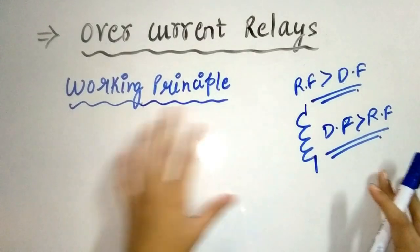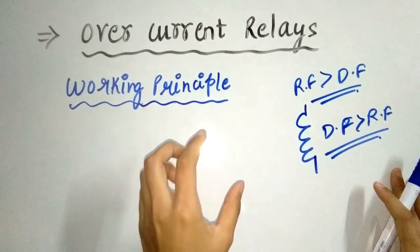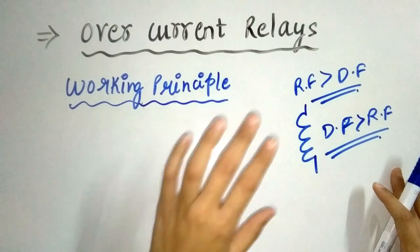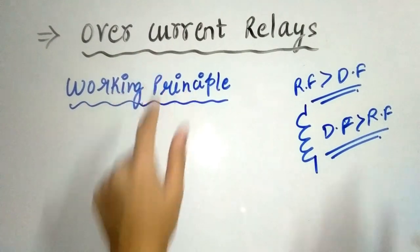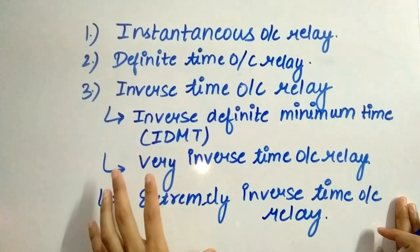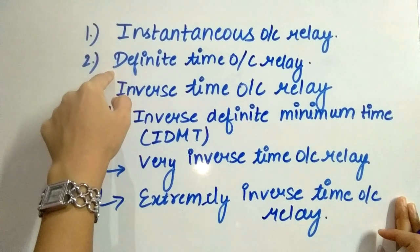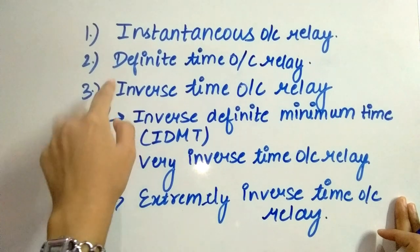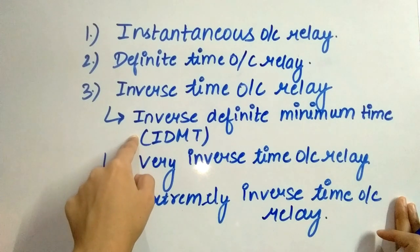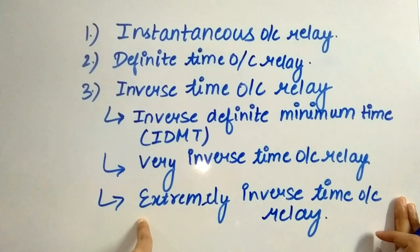The basic working principle is the same for all types of overcurrent relays. There are various types of overcurrent relay depending upon the time of operation: first is the instantaneous overcurrent relay, second is the definite time overcurrent relay, and third is the inverse time overcurrent relay, which is further subdivided into three categories — inverse definite minimum time (IDMT), very inverse time, and extremely inverse time overcurrent relay.